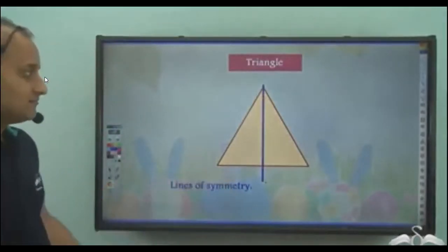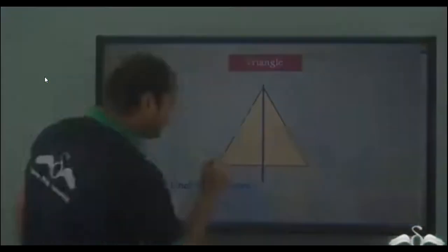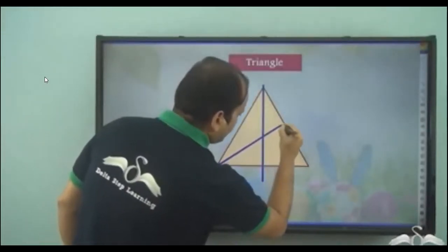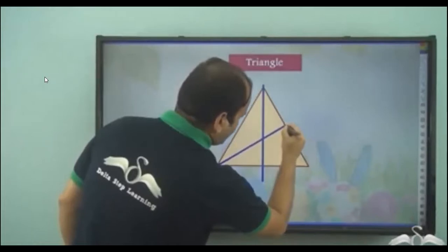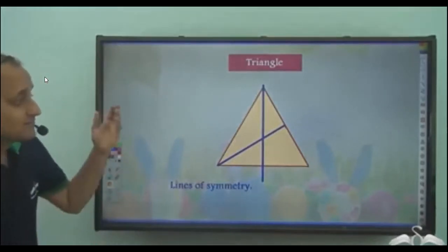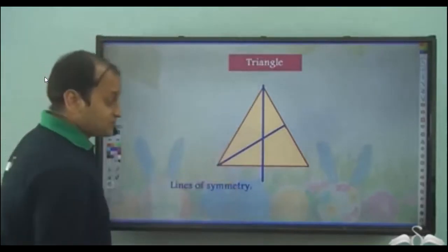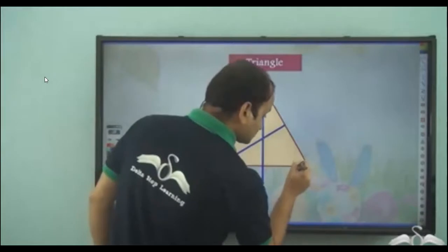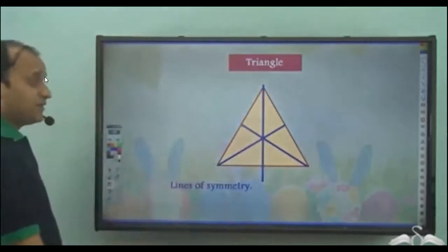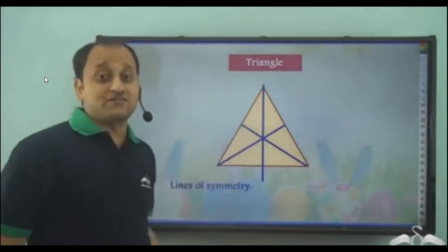If I draw this line it actually gives me two mirror halves. This line also gives us two mirror halves — so this is another line of symmetry. If I draw this line, I again get two mirror halves — so this is another line of symmetry. And if I draw this particular line, I again get two mirror halves — so this is the third line of symmetry.